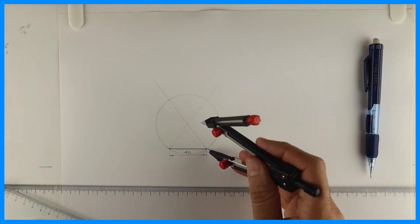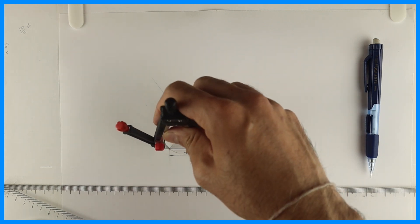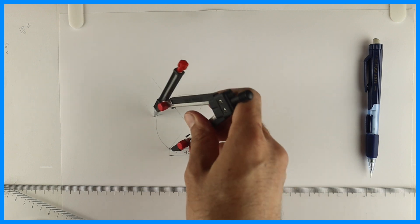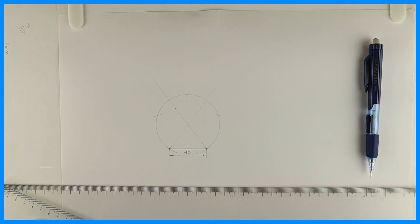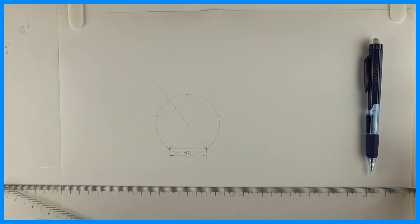Then you take side 40 and you cut on right-hand side, see this, as well as on the left side. Again from here you cut on up, from here also you can cut, it's optional but it should come at the same point.